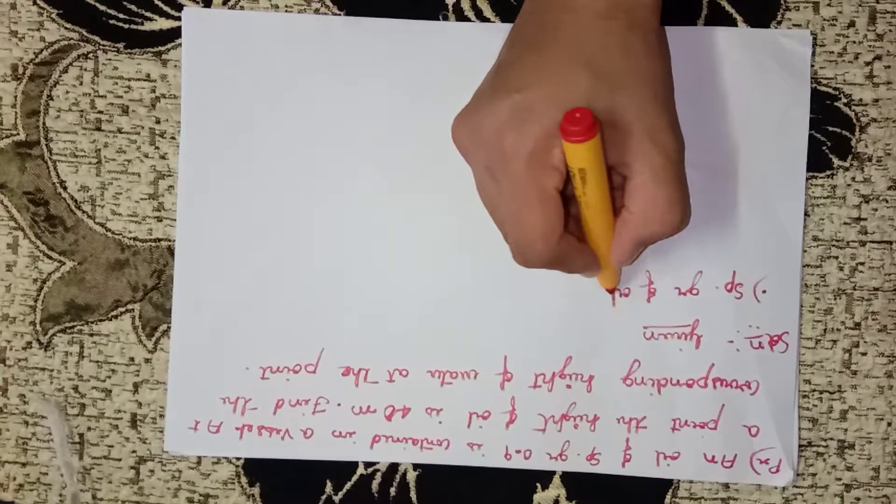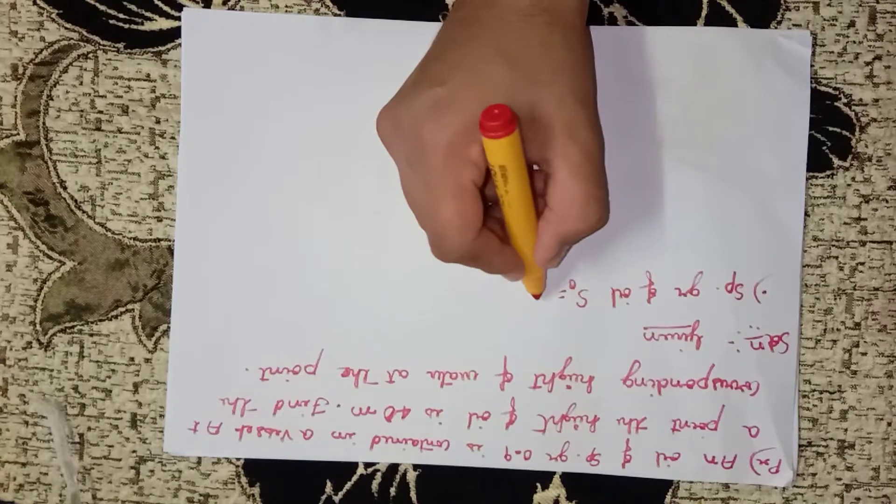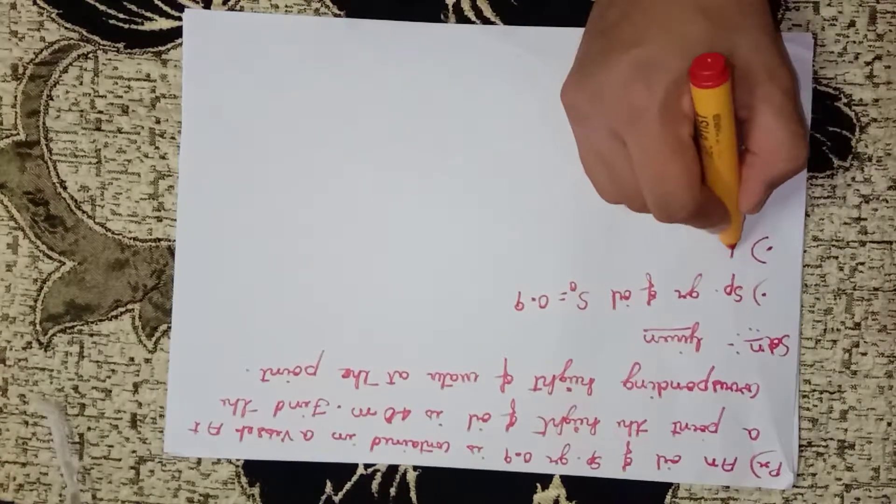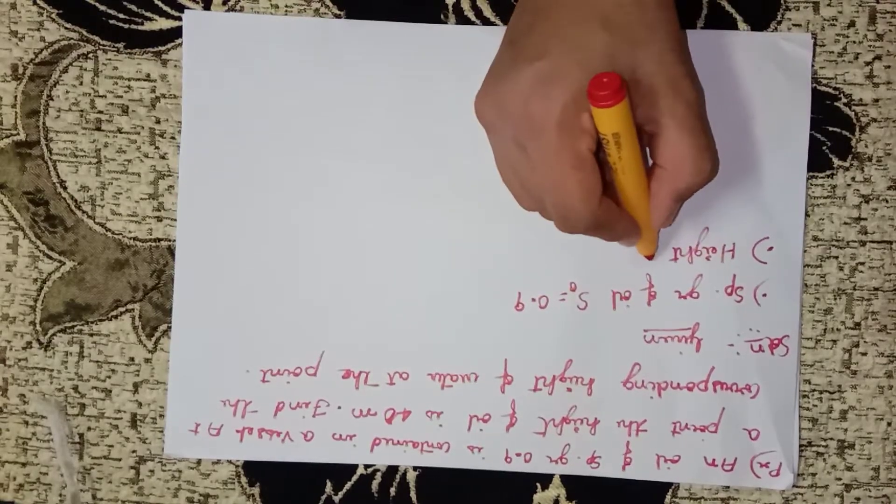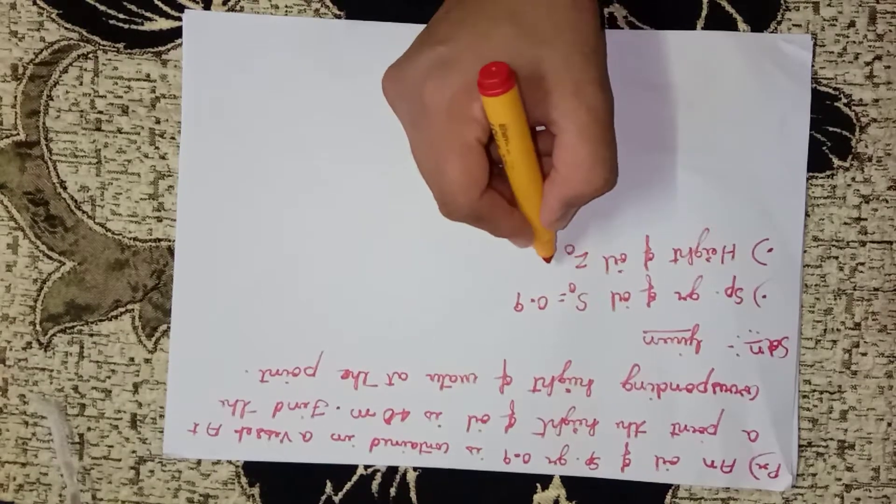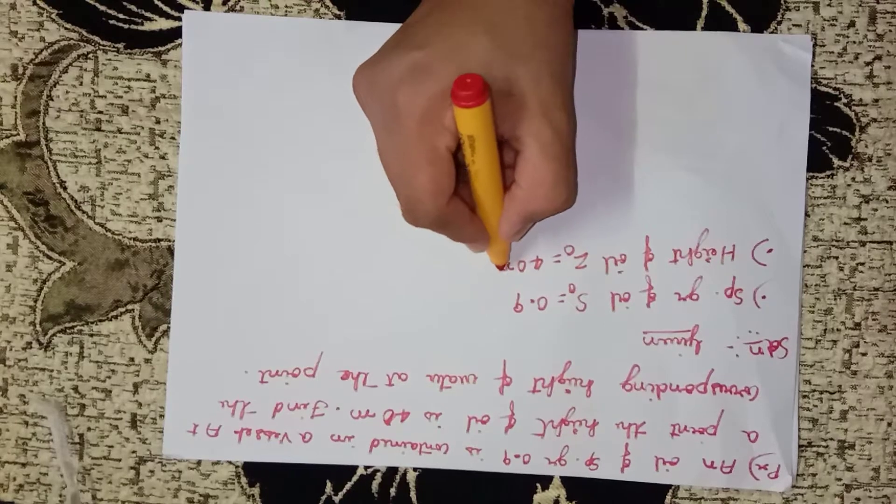Specific gravity of oil, this is 0.9. Then height of oil, z naught, 40 meters.